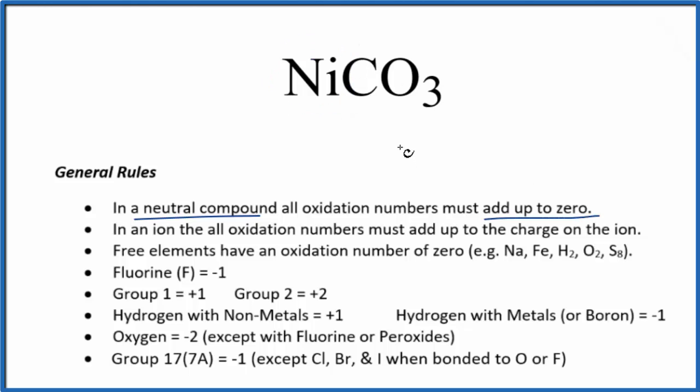Nickel is a transition metal, so we don't know the charge just looking at the nickel. But we can look at what it's bonded to. It's bonded to the carbonate ion. The carbonate ion, the whole thing, has an ionic charge of 2 minus.